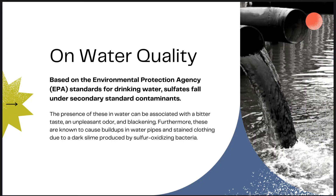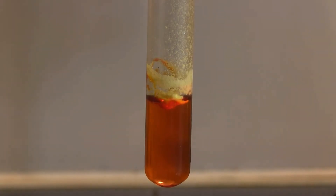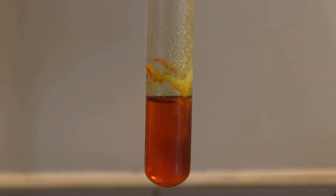As a major part of the environment, water quality is largely affected by sulfur. Based on the Environmental Protection Agency, or EPA's standards for drinking water, sulfates fall under secondary standard contaminants. The color of the solution slowly changes from yellow to reddish to almost red-black when the sulfur dissolves in it.